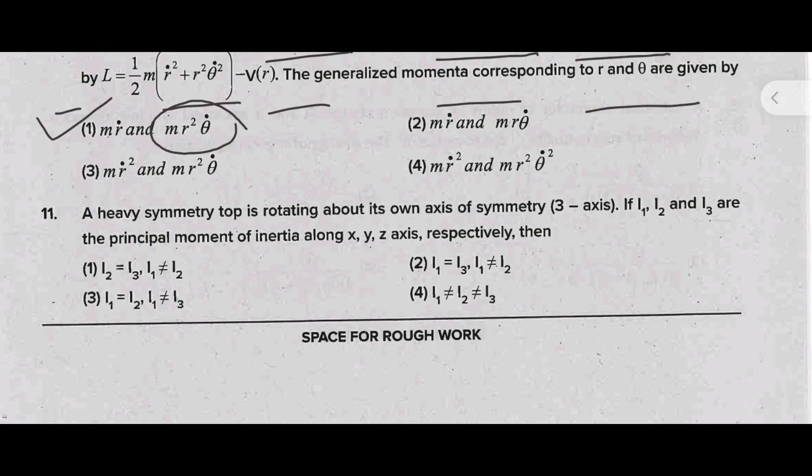A heavy symmetry top is rotating about its own axis of symmetry, the three axis. If I1, I2, and I3 are the principal moments of inertia along X, Y, Z axis respectively, then the correct answer is option 3: I1 equal to I2, I1 is not equal to I3.